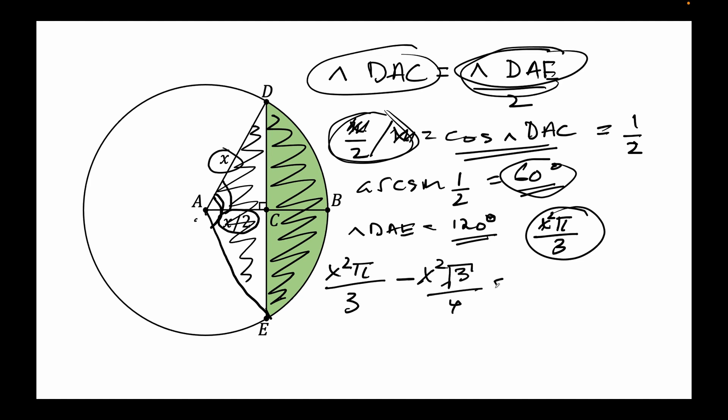And we can simplify this a bit by writing X squared pi divided by 3 minus the root of 3 divided by 4. So this, my friends, is the expression of this green area here.